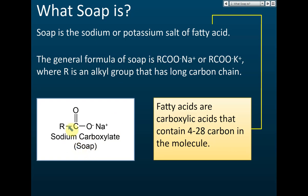Fatty acids are carboxylic acids — we have learned about carboxylic acids in carbon compounds: methanoic acid, ethanoic acid, and so on. Carboxylic acids that contain 4 to 28 carbons are called fatty acids. For example, butanoic acid (4 carbons), pentanoic, hexanoic, heptanoic — all of these are considered fatty acids. A fatty acid is a carboxylic acid that contains 4 to 28 carbons in the molecule.